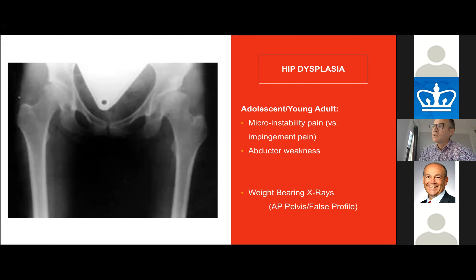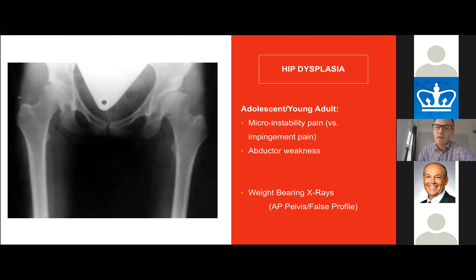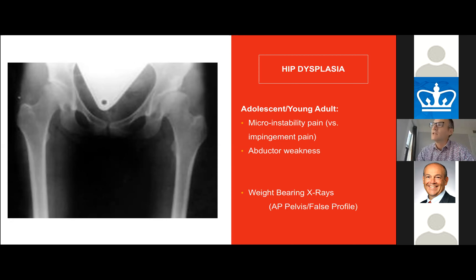Carefully check for abductor strength, because one of the early signs of hip dysplasia in adolescence is a Trendelenburg gait. The mainstay of diagnosis in older children and young adults remains the x-ray. Additional imaging such as CTs and MRI scans are of relatively minor additional value.